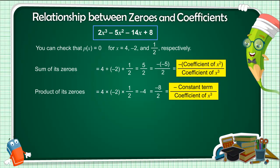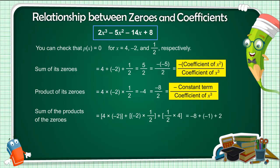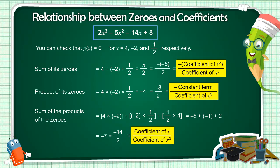However, there is one more relationship here. The sum of the products of the zeros taken two at a time equals (4)(minus 2) plus (minus 2)(1/2) plus (1/2)(4), which equals minus 8 plus (minus 1) plus 2, which equals minus 7. We can write this as minus 14 by 2 — that is, the coefficient of x upon the coefficient of x³.